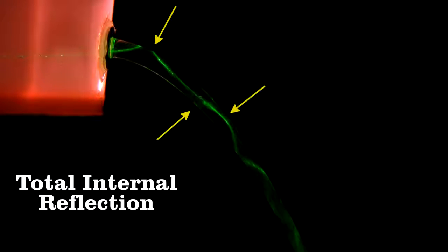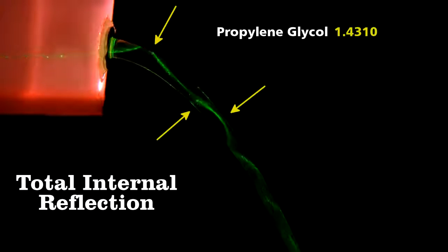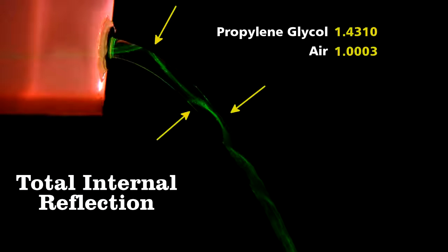This occurs because there's a difference between the index of refraction of the guide material, here propylene glycol, and the outside, air in this case.